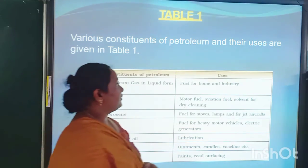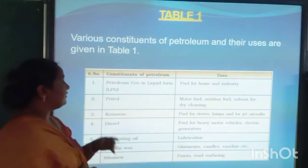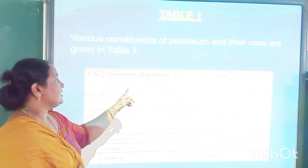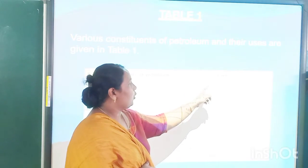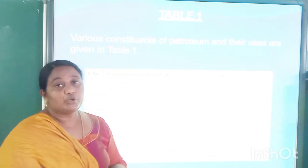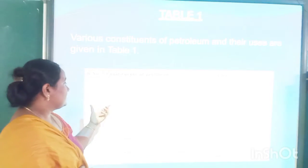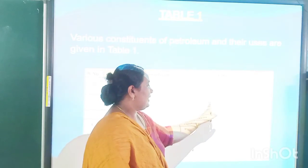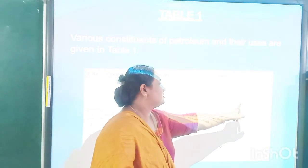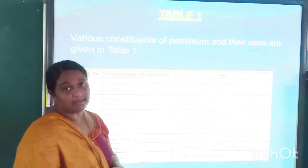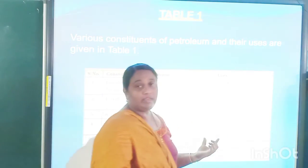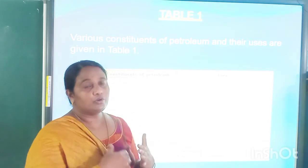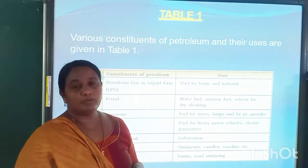Various constituents of petroleum and their uses are given in a table. Petroleum gas in liquid form is used as fuel for home and industry — that is the cooking gas we use. Petrol is used as motor fuel, aviation fuel, and for dry cleaning. Aviation fuel is also used for flights and space journeys, and it is more costly than regular petrol.